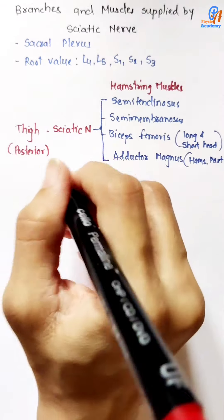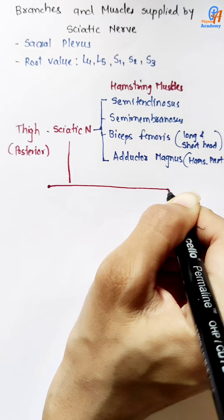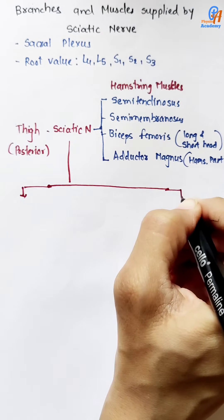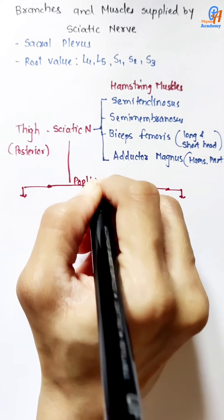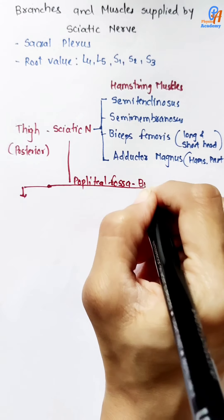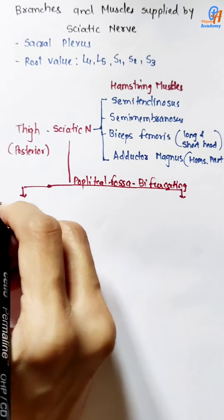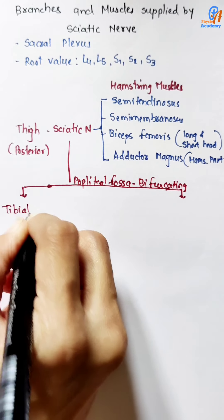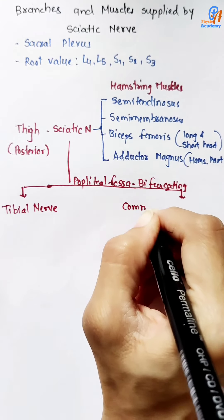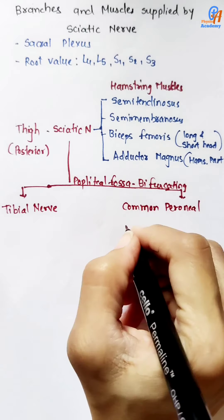The nerve then comes downward to the popliteal fossa and bifurcates into two branches: the tibial nerve and the common peroneal nerve, also called the common fibular nerve.